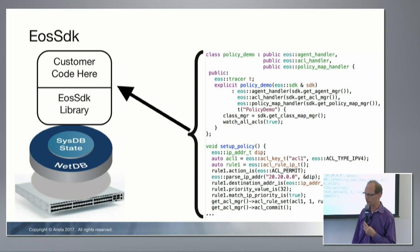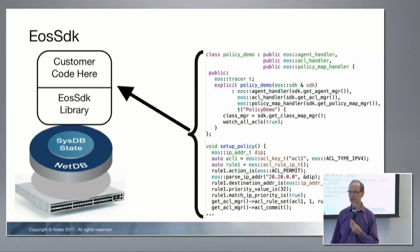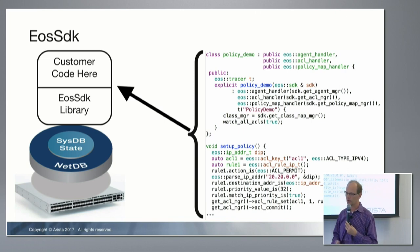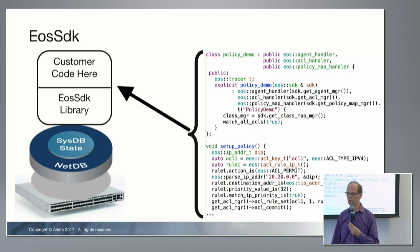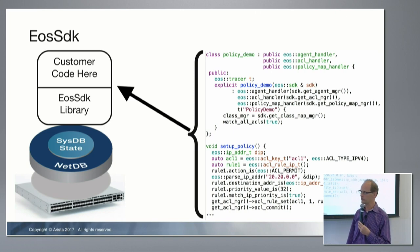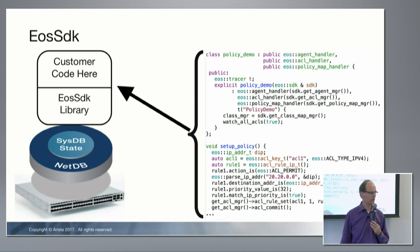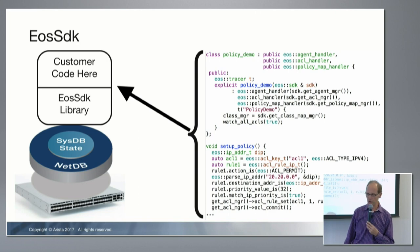The customer code can then update the control plane through the database — loading their own static routes, ACL entries, policy routes, manipulating interface configuration — really doing anything they want. This enables customers to effectively create custom control planes: their own approach to routing, egress peer engineering, traffic engineering, segment routing, and DDoS mitigation and protection.